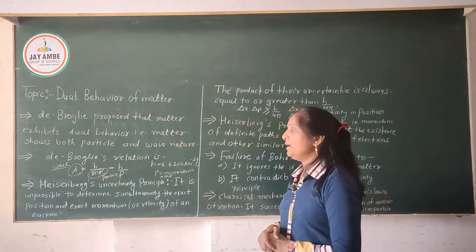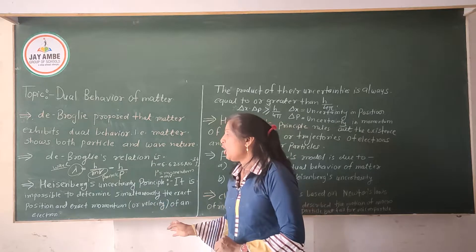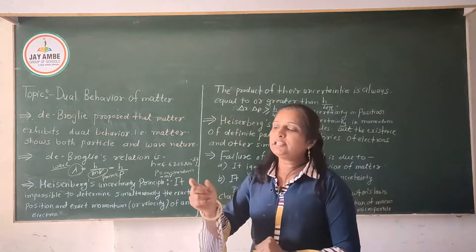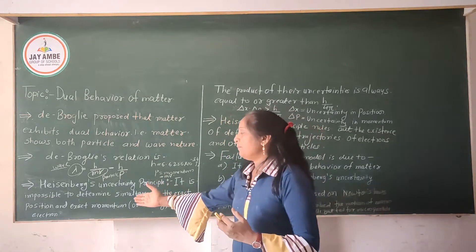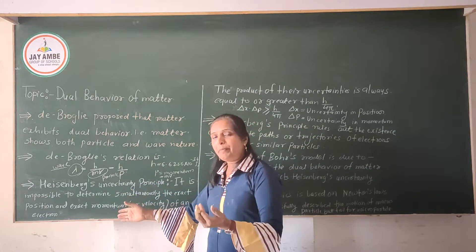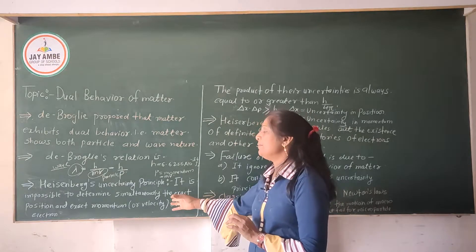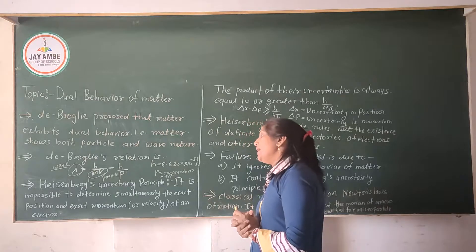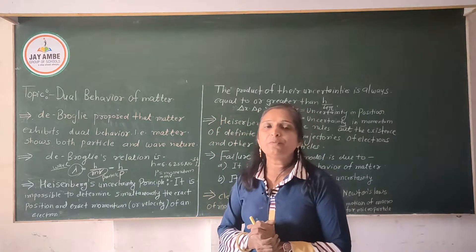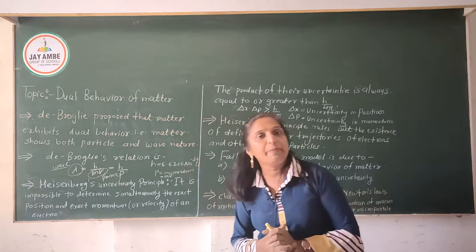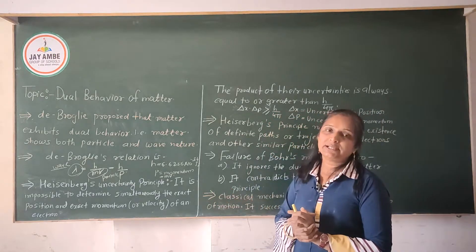According to Heisenberg's uncertainty principle, it is impossible to determine simultaneously the exact position and exact momentum of an electron. If an electron is moving around the positively charged nucleus, at that time we cannot simultaneously find out its velocity or momentum and position. It is impossible to determine simultaneously the exact position and exact momentum of an electron.